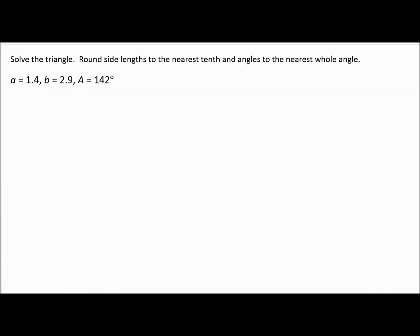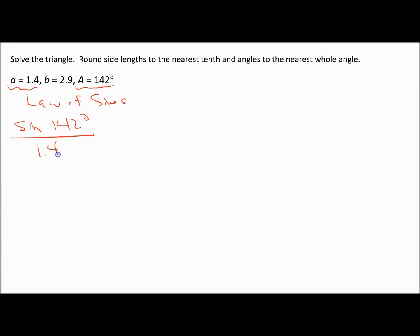For the next problem, I again check: do I know two angles? No — only angle A is 142 degrees. Do I have an angle and the side directly across from it? Yes — matching letters. So I can use law of sines. But this is a side-side-angle problem, so we might have no triangles, one triangle, or two triangles. I set up: sine(142°)/1.4 = sine(B)/2.9.